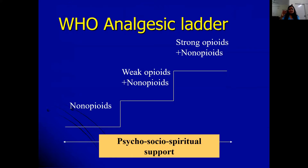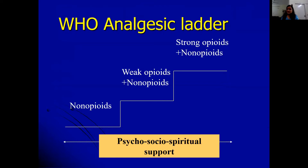Which step to use is determined by the severity of pain. Mild pain starts at step one, moderate pain at step two, and severe pain at step three. It is the severity of pain, not the stage of disease, that determines which step to start with. A patient with advanced cancer and mild pain uses step one; a patient with severe pain from an undiagnosed mass starts at step three.